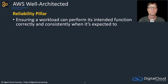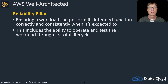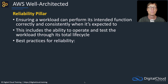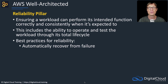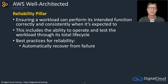Next, we have the Reliability pillar. This is about ensuring your workloads perform correctly and consistently as expected for whatever they do, including the ability to operate and test the workload for its entire lifecycle. The best practice is to automate recovery from failure — make sure that when something goes wrong, like a system fails, you can automatically recover without manual involvement. Think about Amazon EC2 Auto Scaling: if an instance fails, it will be automatically replaced by Auto Scaling and your load balancer will start distributing traffic to it — that's automatic recovery.